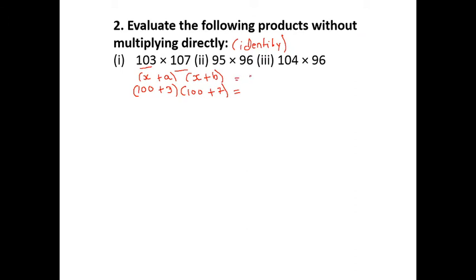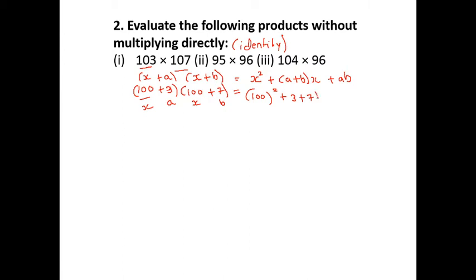Applying (x + a)(x + b) = x² + (a + b)x + ab: take x = 100, a = 3, b = 7. So 100² + (3 + 7)×100 + 3×7 = 10,000 + 10×100 + 21 = 10,000 + 1,000 + 21 = 11,021.